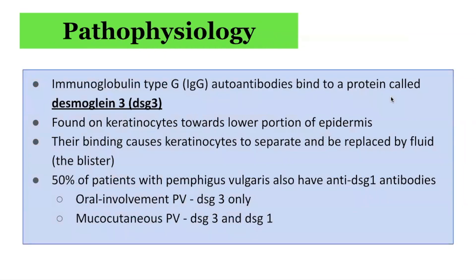The underlying pathophysiology of Pemphigus vulgaris involves immunoglobulin type G (IgG) autoantibodies that bind a protein called Desmoglein 3, one of the components of the desmosomes which form the interconnection between keratinocytes. Their binding causes keratinocytes to separate and be replaced by fluid, which forms a blister at the intraepidermal level.